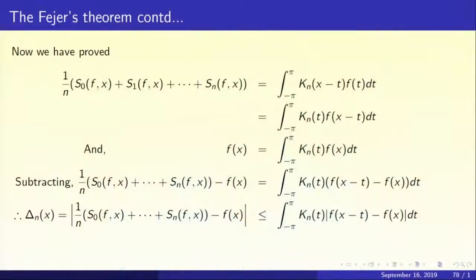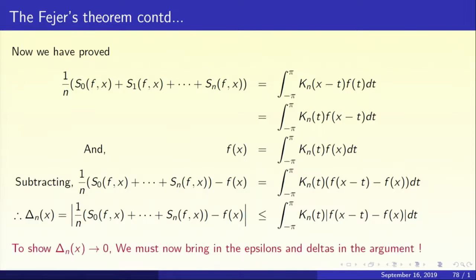To prove that the arithmetic means converge to f, we have to show that delta_nx goes to 0. Delta_nx is dominated by the integral from minus pi to pi of k_n(t) times mod of f(x minus t) minus f(x), dt. So let us estimate this integral. We must now bring in the epsilons and deltas — it is time to invoke them.